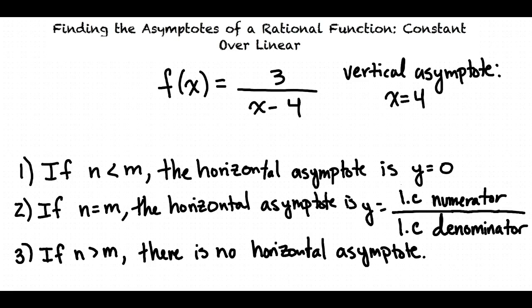Now let's see which rule applies to our problem: f(x) = 3 over (x minus 4). A constant expression has a degree of 0, because we can think of 3 as 3 times x to the 0th power. So our numerator has a degree of 0. A linear expression has a degree of 1, because we can think of x as x to the first power. So our denominator has a degree of 1. Since 0 is less than 1, we use the first rule: if the degree of the numerator is less than the degree of the denominator, the horizontal asymptote is y = 0. So we have a horizontal asymptote at y = 0.